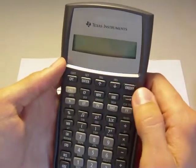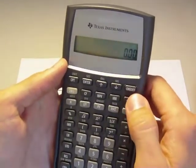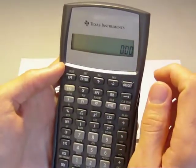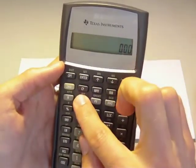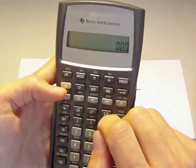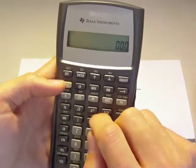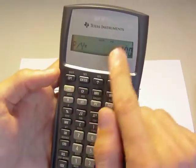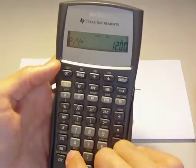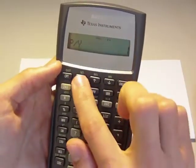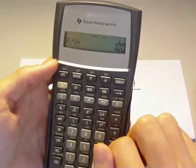So the first thing that we want to do is we want to turn the calculator on. And with the BA2, sometimes the payments per year is set to 12. So you want to change that. Hit second, payments per year. And if it is set to 12, then you just want to hit 1 and then hit enter. And it should be set to 1 now.